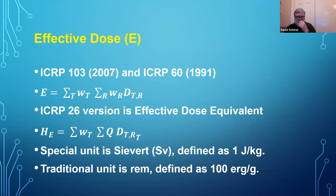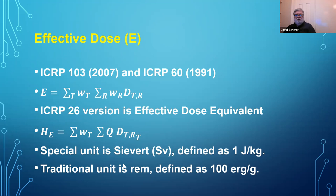In either case, the unit we use to measure effective dose or effective dose equivalent is the sievert. One sievert is one joule per kilogram. It's not a physical quantity because we're multiplying by factors based on judgment, not physical measurement. The traditional units — the old-fashioned units — are the rem. One rem is 100 ergs per gram, and one rem equals one centisievert.